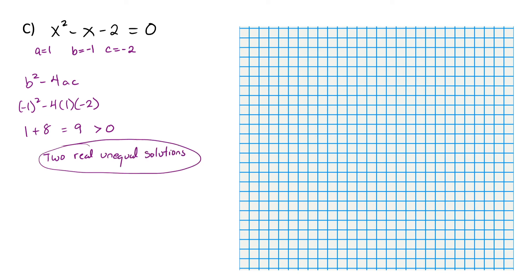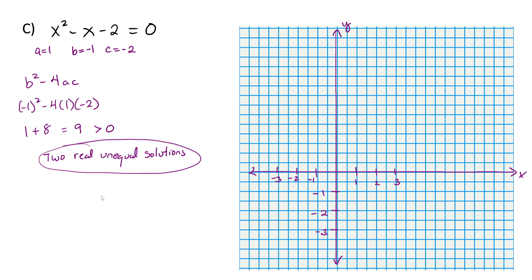If we take a look at what's going on graphically to better understand why there are two solutions, the graph of this equation looks something like this. If we did go through and use the entire quadratic formula to solve this, we would end up getting our solutions are x is equal to 2 and x is equal to negative 1. Those correspond to our x-intercepts on the graph. We also have the vertex, which we'll talk about more in chapter 9. The graph intersects the x-axis in two places, and that's why there are two real solutions.